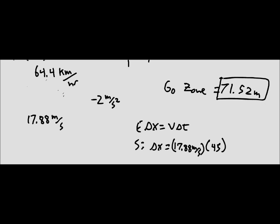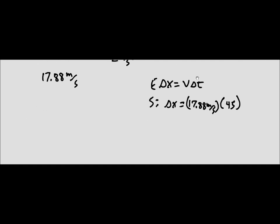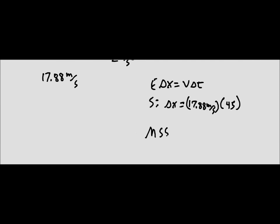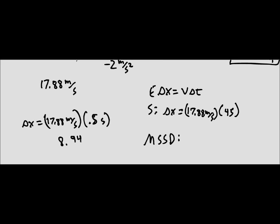Now we find the minimum safe stopping distance. First, we calculate the reaction distance using the same equation: change in x equals seventeen point eight eight meters per second times zero point five seconds. The distance traveled during reaction time is eight point nine four meters.